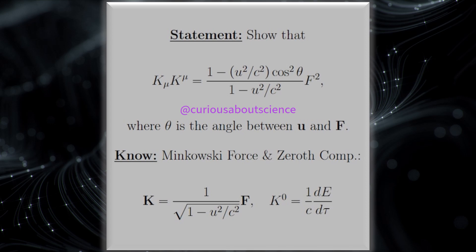Welcome back. Of course, we can't move on to much else without discovering what the invariant product — the four-dimensional scalar product of K_mu K^mu — is. So that's what we want to show: what is the Minkowski force invariant product? We want to show that this is the case where we have (1 minus u² cos²θ / c²) divided by (1 minus u²/c²), times F². We've kind of seen something like this before with fields and the cosines and sines working in.